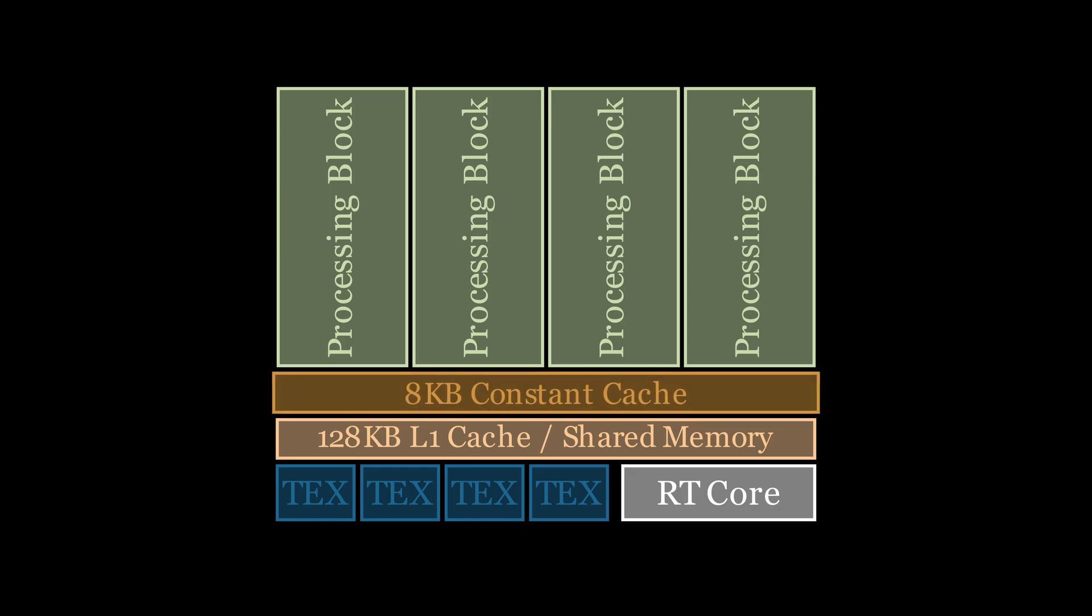The first benefit is that it is cached in a different cache than global memory. This means that by using constant memory, we are actually freeing up space in our L1 for other variables.